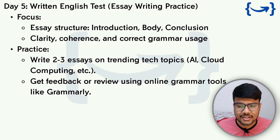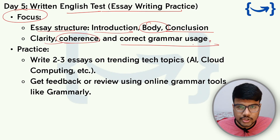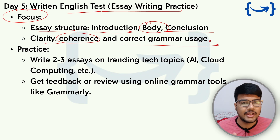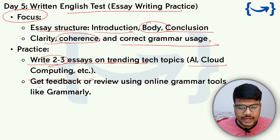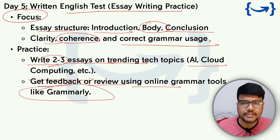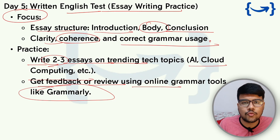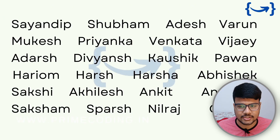Day 5 covers the Written English Test — focus on essay structure: introduction, body, conclusion, clarity, coherence, and correct grammar, since this is a unique round CapGemini uses to shortlist candidates with strong writing skills. Practice by writing two to three essays on trending tech topics like AI and cloud computing. Get feedback using online grammar tools like Grammarly, or copy-paste your writing into Gemini or ChatGPT to get grammar corrections and improvement suggestions.